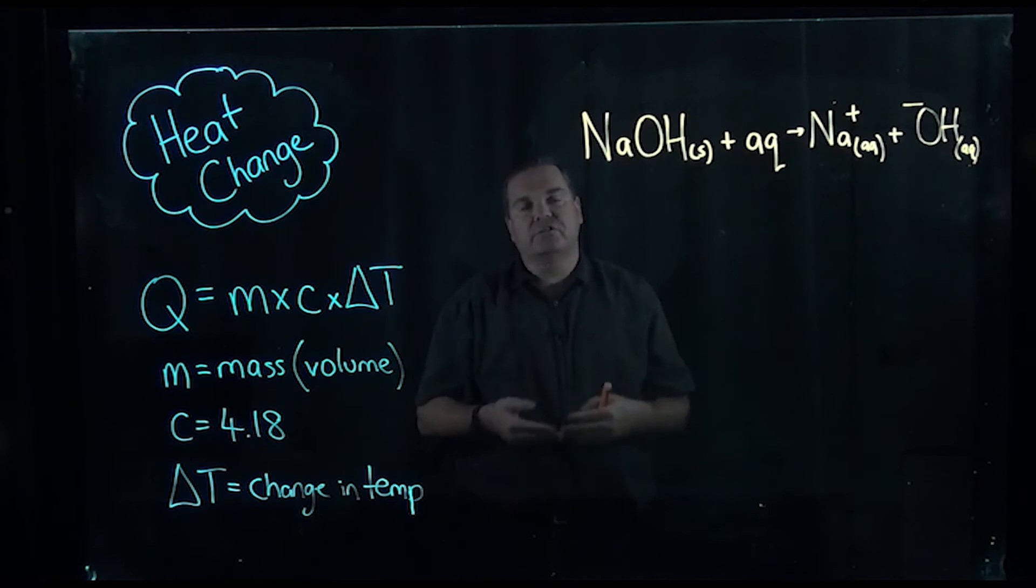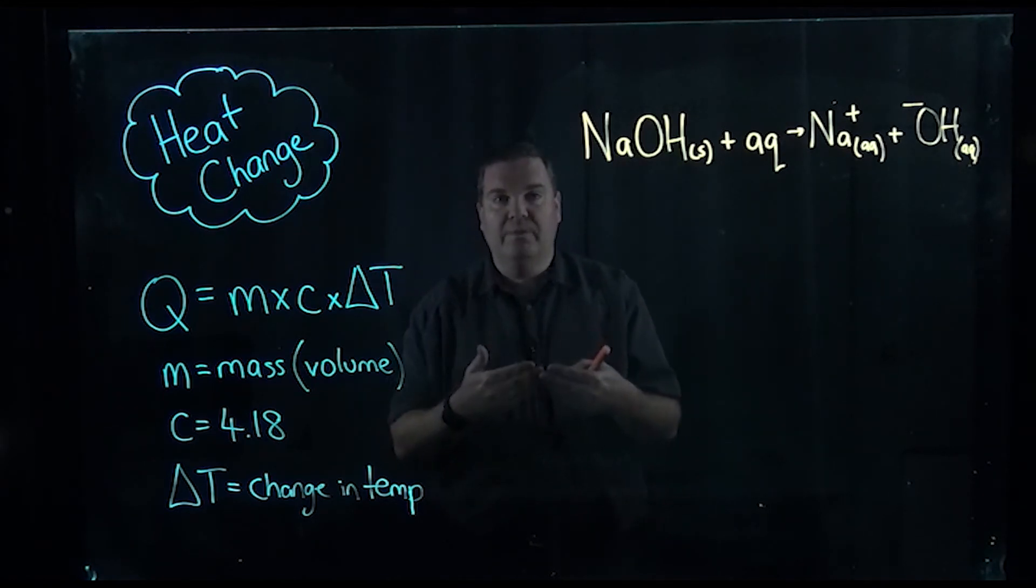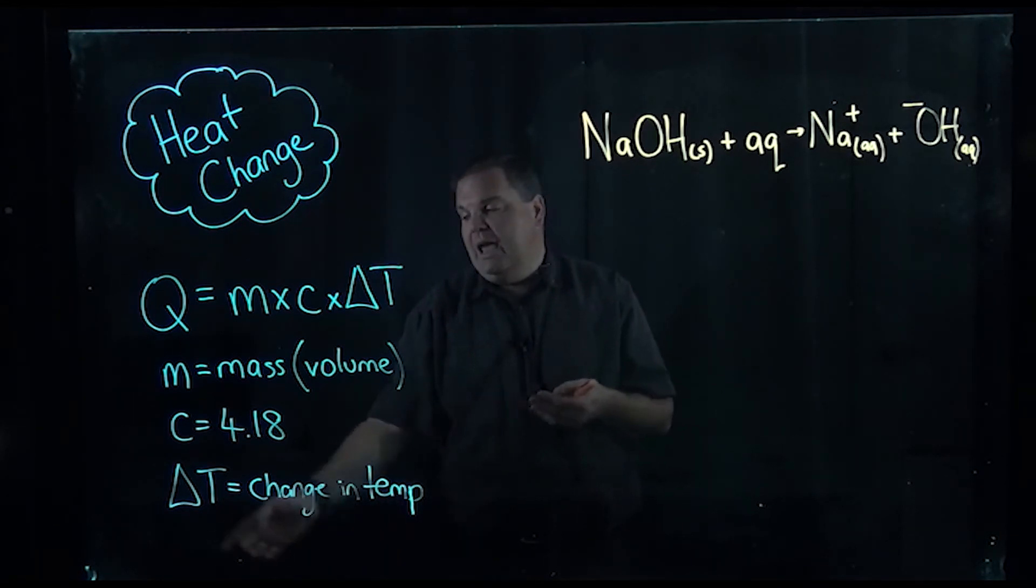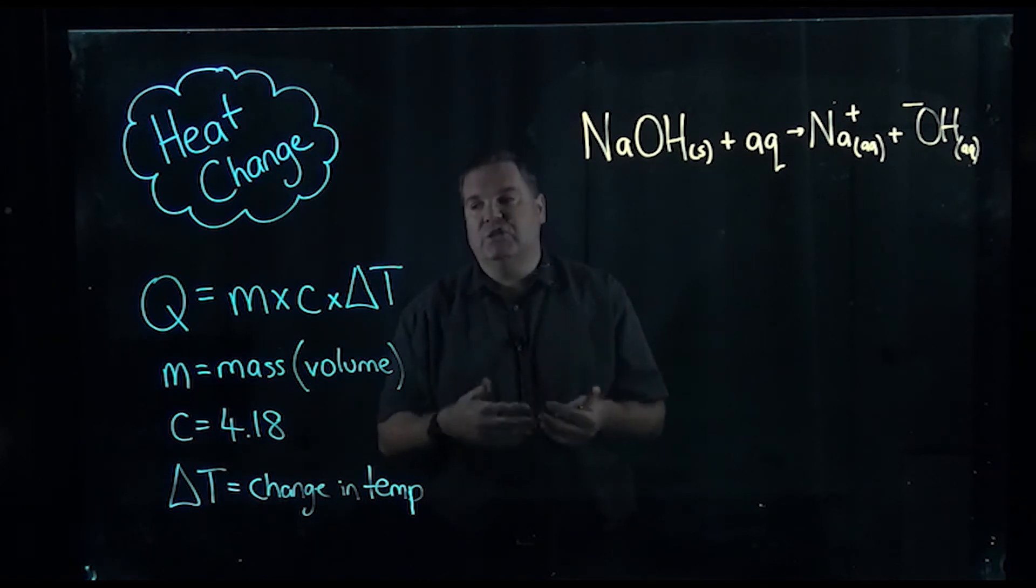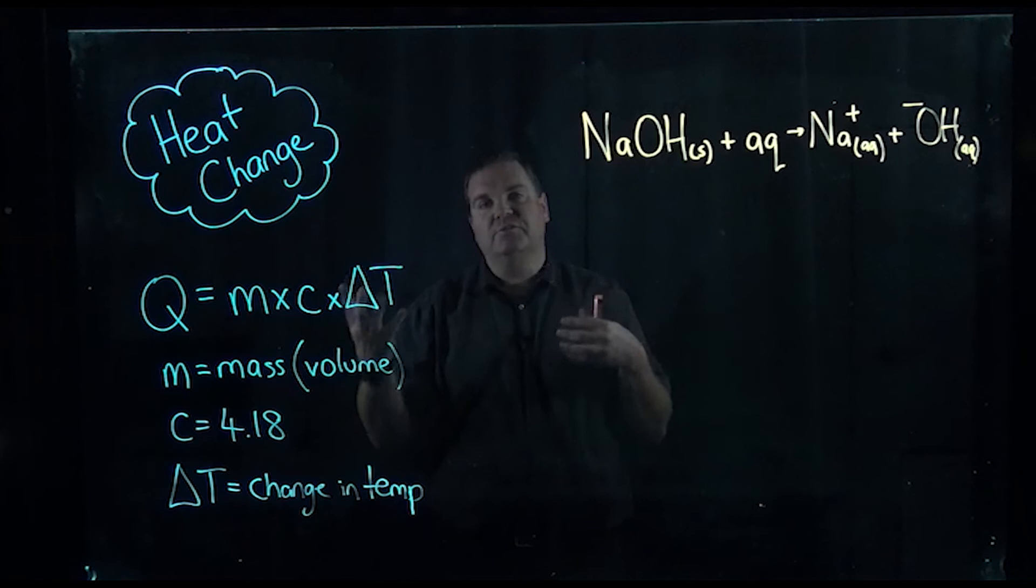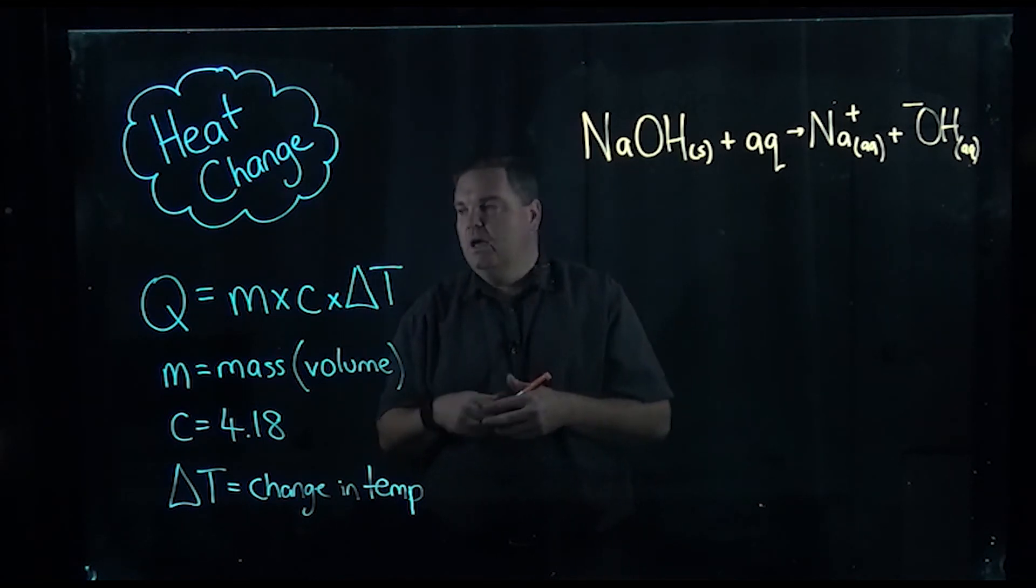So we can use the fact that 4.18 joules puts heat into 1 mil or 1 gram of water by 1 degree - we can calculate the energy involved. And then delta T is just the heat change. The delta, the triangle, just means changing, so it's the difference between the initial and the final temperature.